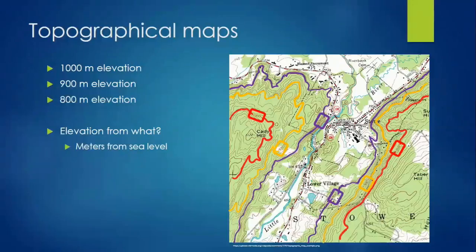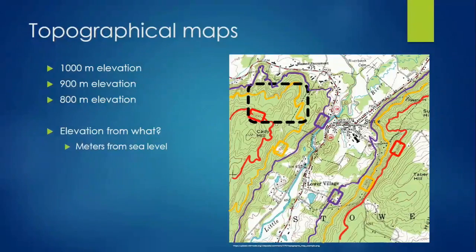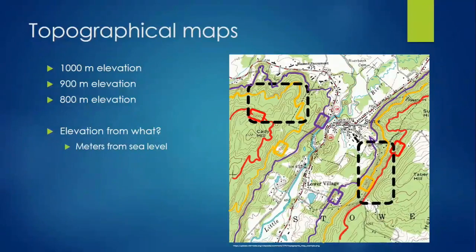These elevations are meters above sea level, so the elevation at the beach would be at 0 meters, while mountains can be thousands of meters above sea level. As we learned before, the highest points in the landscape are watershed boundaries, while the lowest points are where water collects. With contour maps, we can also tell how steep the land is. In box 1, the 1000 meter contour line is far away from the 900 meter contour line, meaning the land slowly slopes. In box 2, the contour lines are close together, meaning that the elevation is changing quickly over a small area of land, resulting in a steep hill or mountain.